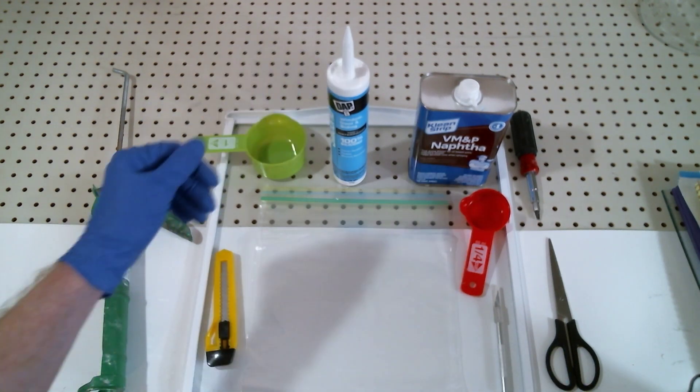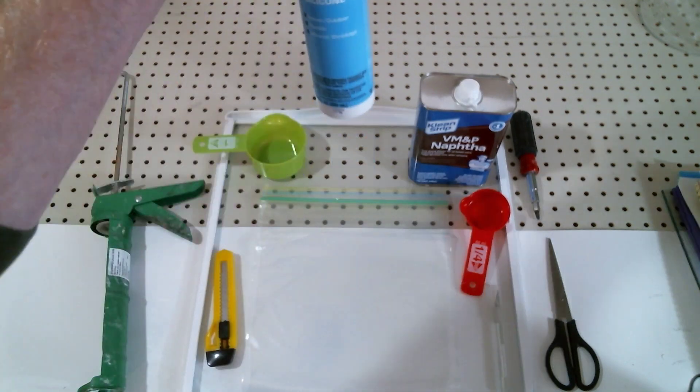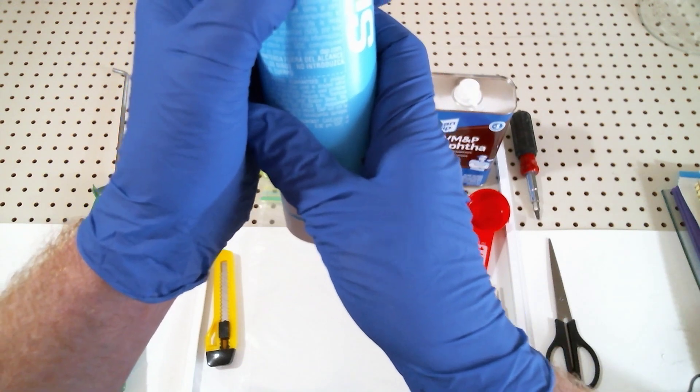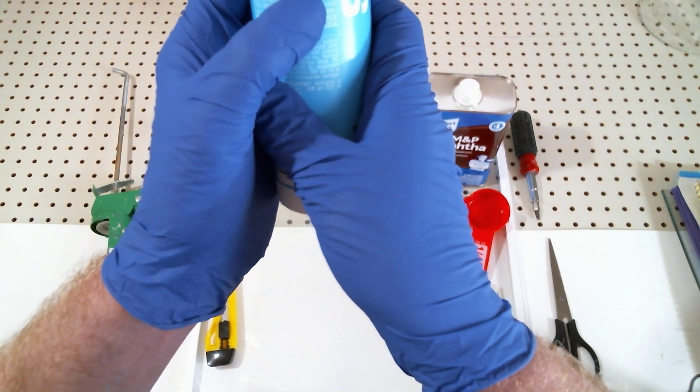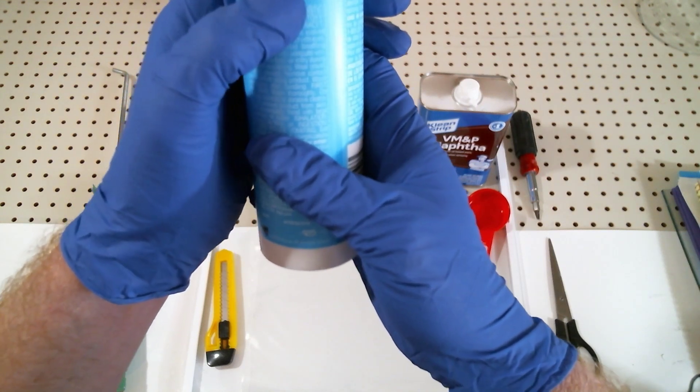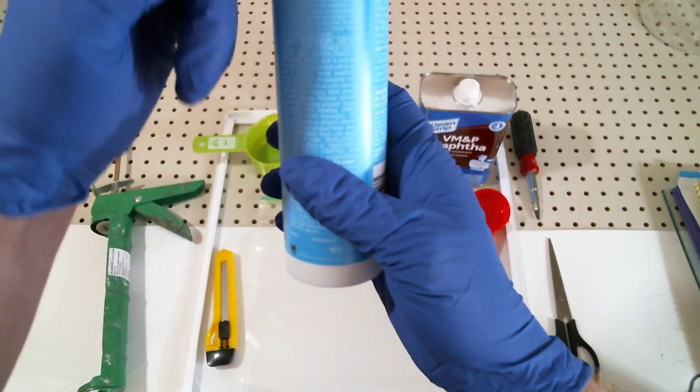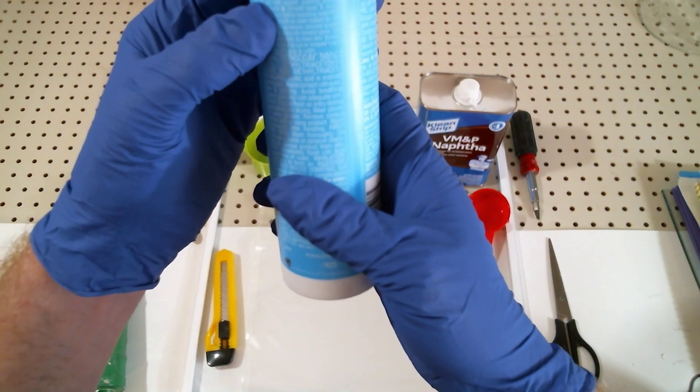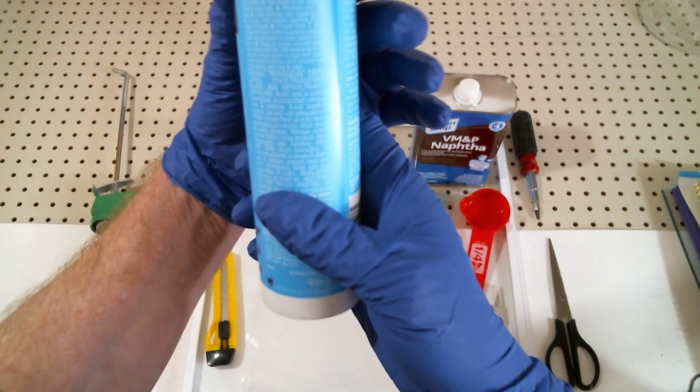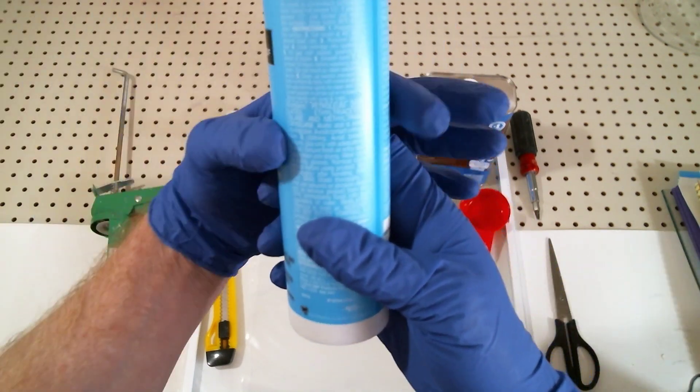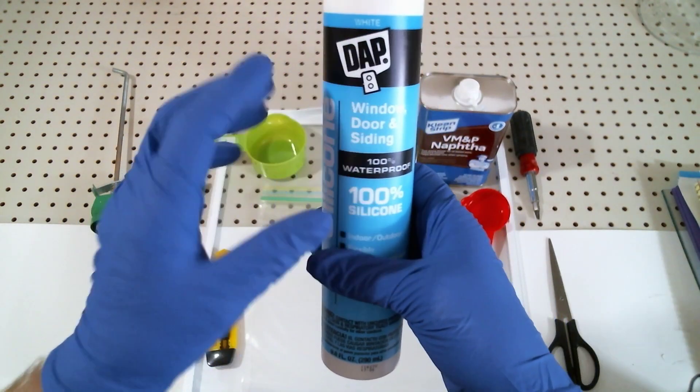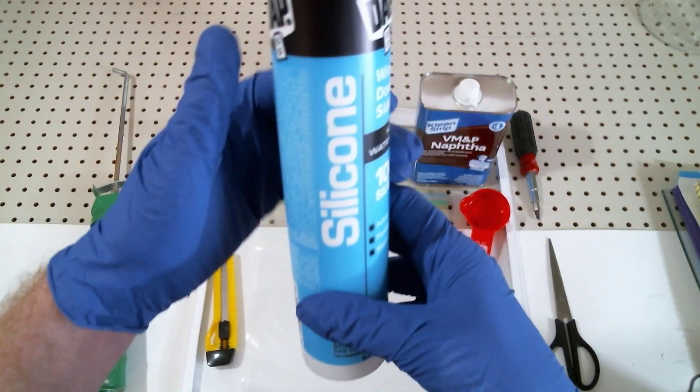Okay, so we have the silicone. Once again, you want to look on the back and see the words acetic acid and make sure that it says acetic acid is evolved in curing. The printing is hard to see, but you want to look for those words. You want to make sure that it's 100% silicone. I like to use the white; it's easier for me to work with.